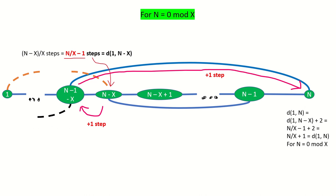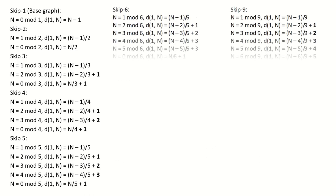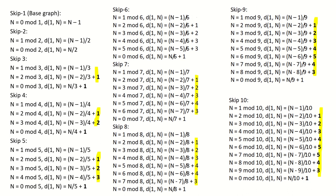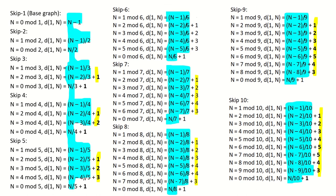Interesting. Now I'm going to do this for skip 5 through skip 10. We can't do them all on video because it would take too long, so I'll do it and then show you the results. I invite you to pause the video and work out a few or all of these for yourself. So here are the results for skip x graphs of size n where n is 0 mod x through x minus 1 mod x. An interesting pattern has emerged in the constants we add to the fraction term. Let's examine why this pattern arises.